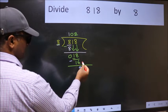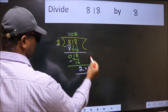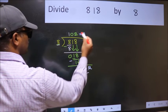No more numbers to bring it down. So, we stop here. This is our remainder and this is our quotient.